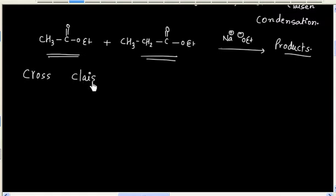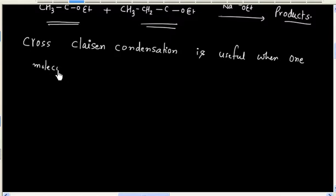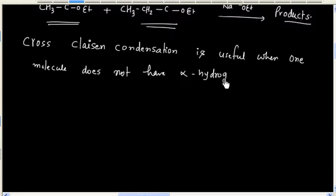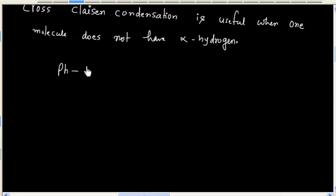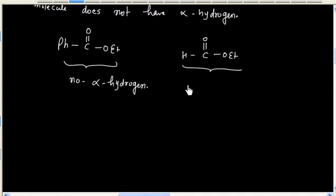Cross-Claisen condensation is useful when one molecule does not have alpha hydrogen. For example, if I have this ester, it does not have any alpha hydrogen. We can also have formate ester — this also does not have any alpha hydrogen.